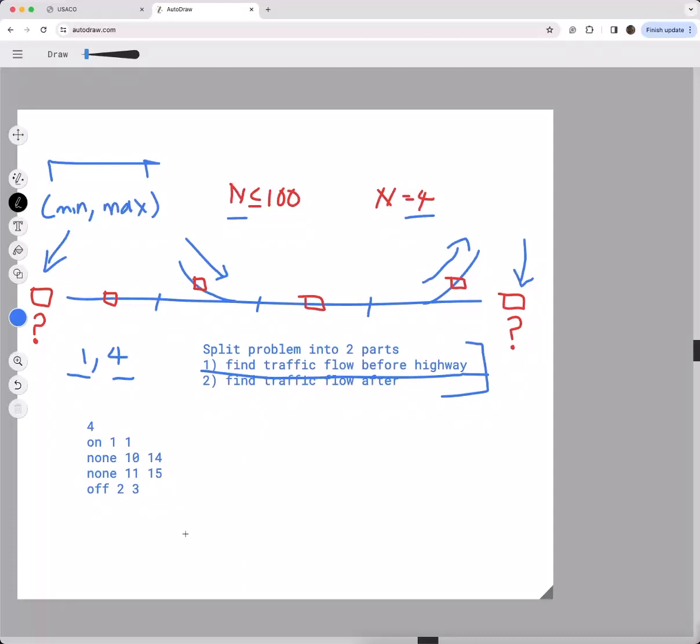That's a pretty big hint for this problem. Let's just get into a little bit more detail. If we're trying to find the traffic flow before the highway, let's take a look at what would happen if we're just looking at these two sensors.